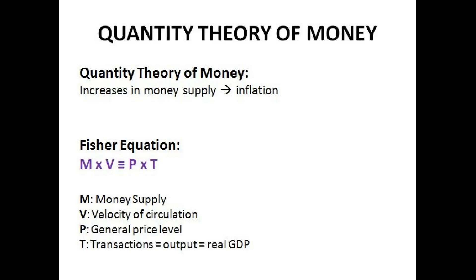Since we want an inflation target of approximately 2%, many economists argued we should have a very careful, constant increase in the money supply. One key figure behind this idea was Milton Friedman, who was a monetarist. Monetarists essentially advocated for the control of money supply within the economy.